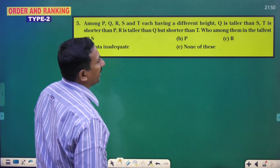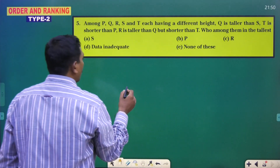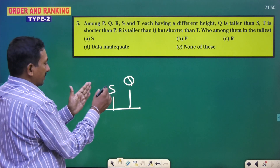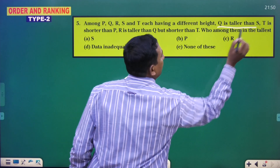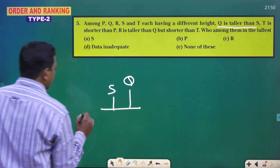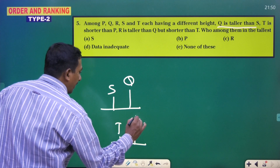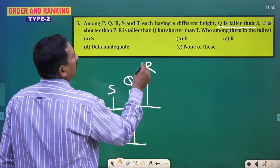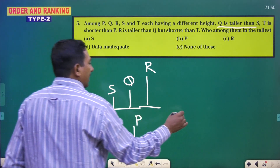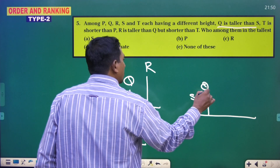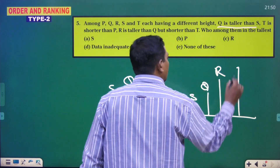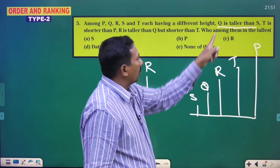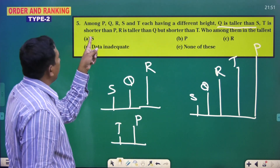Among P, Q, R, S, T each having a different height. Q is taller than S. So S is shorter and Q is taller. And T is shorter than P, meaning P is taller. And R is taller than Q but shorter than T. So the order from shorter to taller: S, then Q, then R, then T, and P. T is shorter than P, and R is shorter than T.